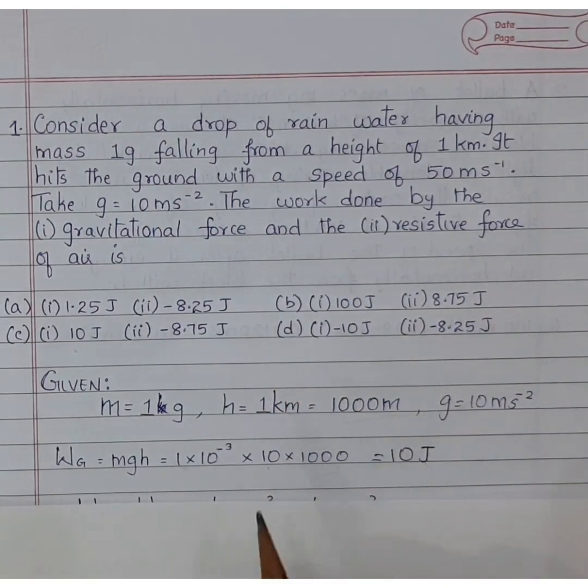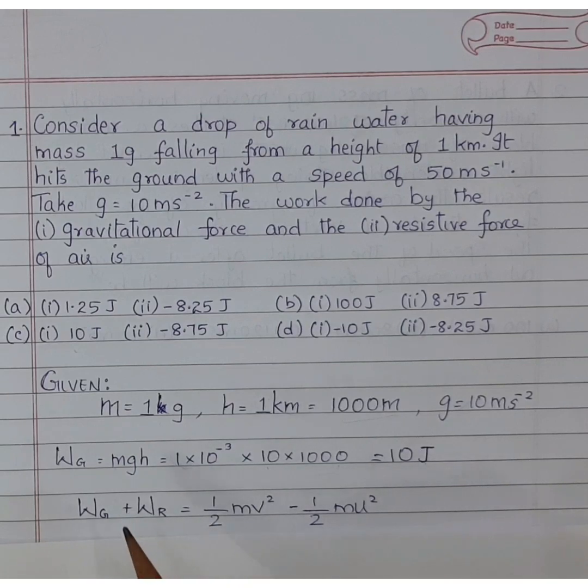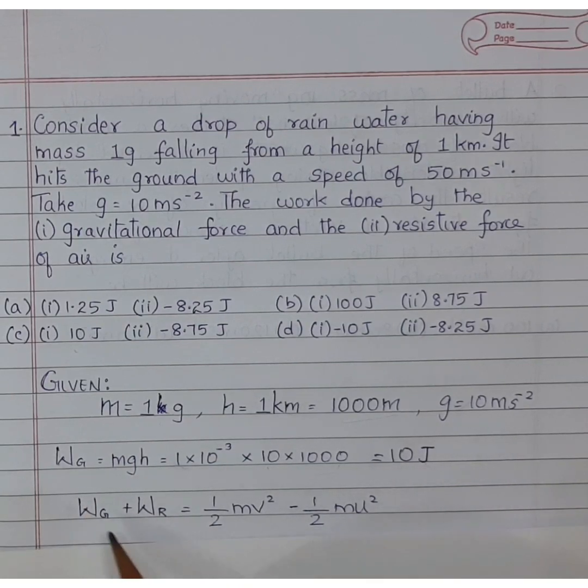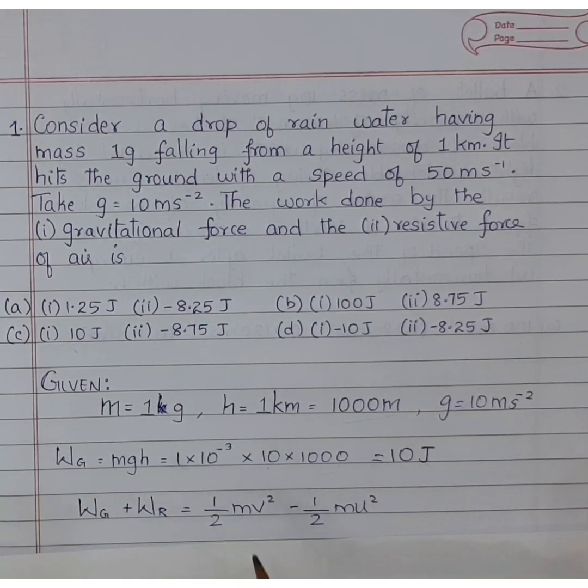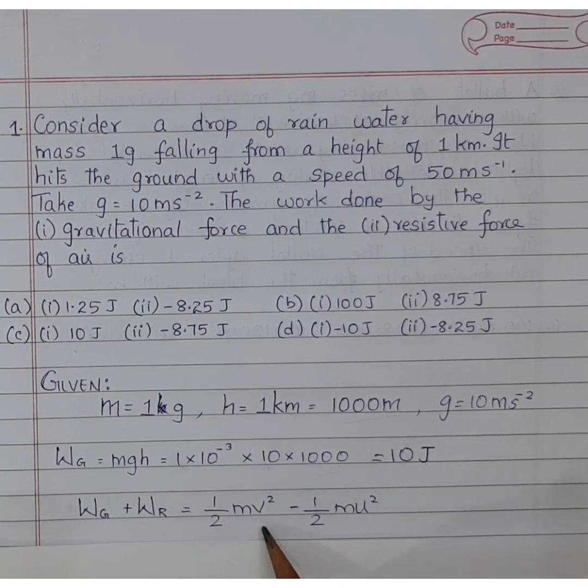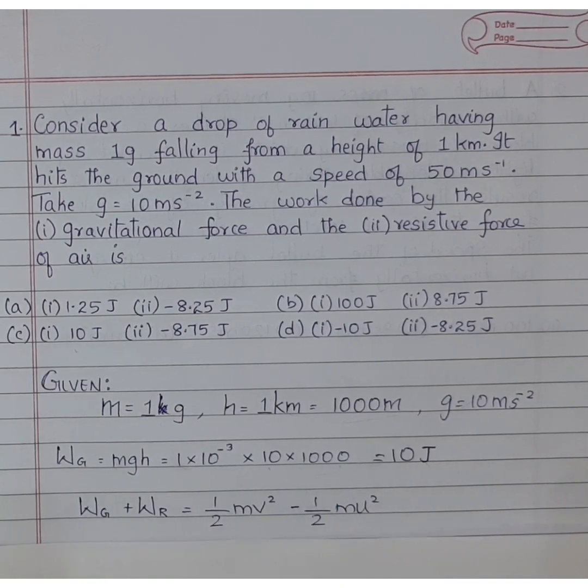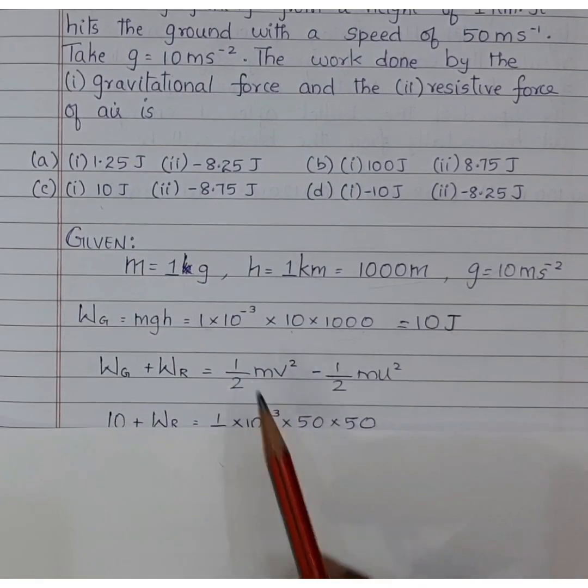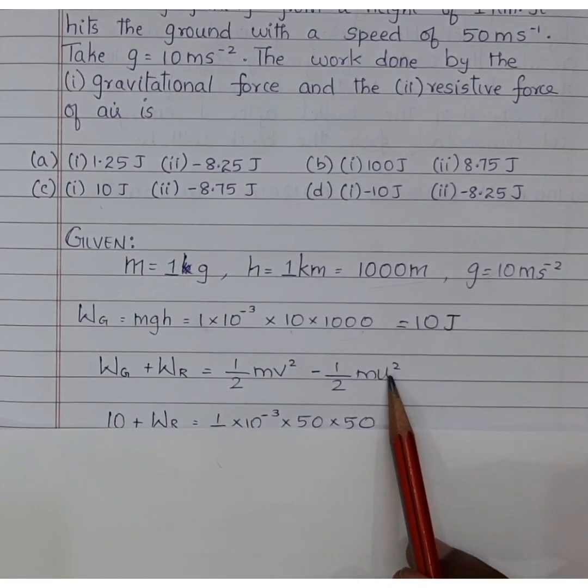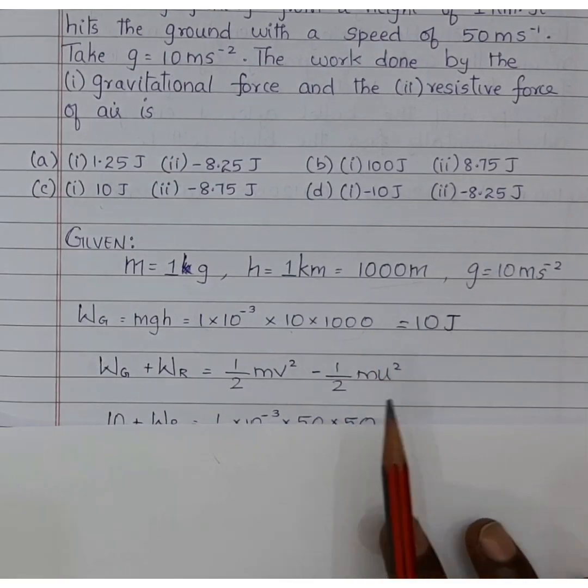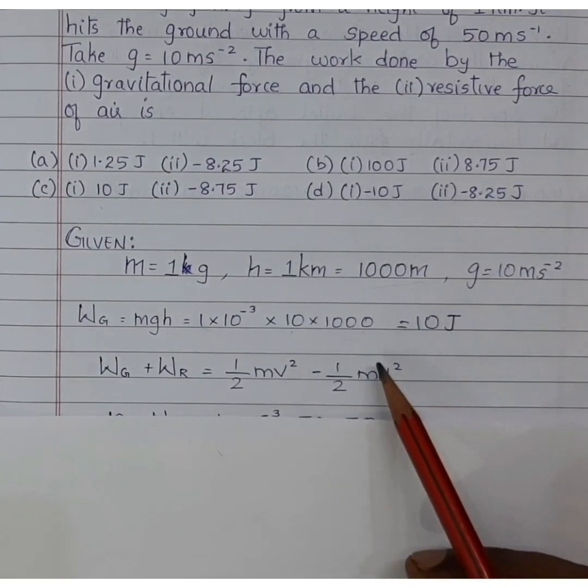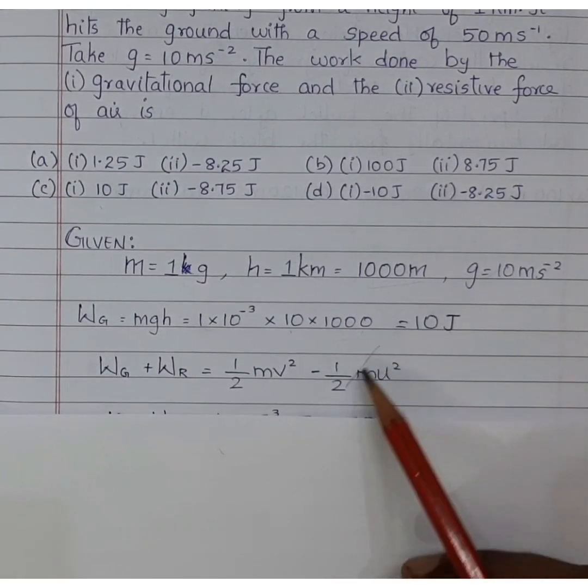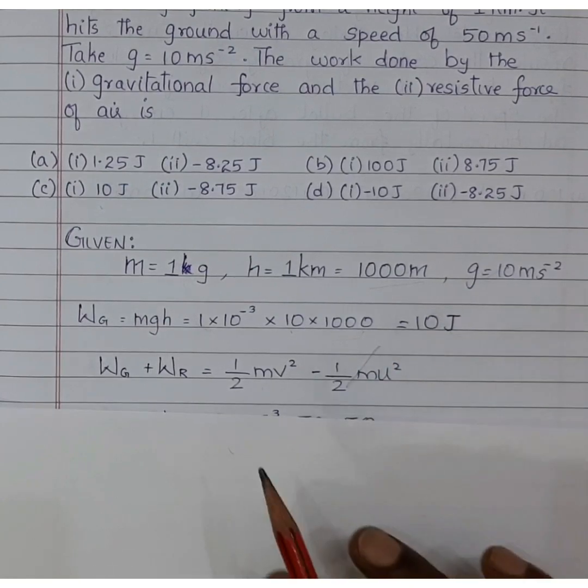Next, work done due to the resistive force. According to work energy principle, we know that total work done is nothing but change in the kinetic energy. That is half mv square minus half mu square, due to the final velocity and initial velocity. But here, the raindrop is falling freely. So initial velocity will be 0. So this component will not be there. That will be 0.